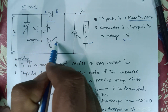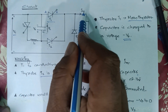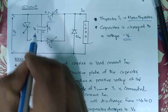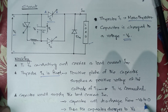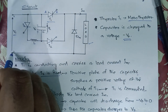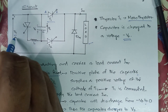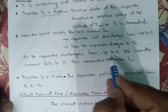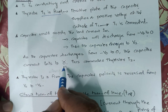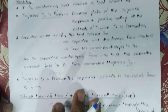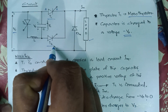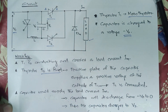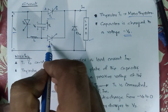The capacitor will discharge through T2 and supply the necessary load current. The capacitor discharges from minus V0 to zero, then charges to Vs taking current from the DC source. When the capacitor discharges from minus V0 to zero, the capacitor current falls to zero — this commutes thyristor T2. T2 is commuted because the capacitor voltage reaches zero from minus V0 and the current through T2 stops flowing.